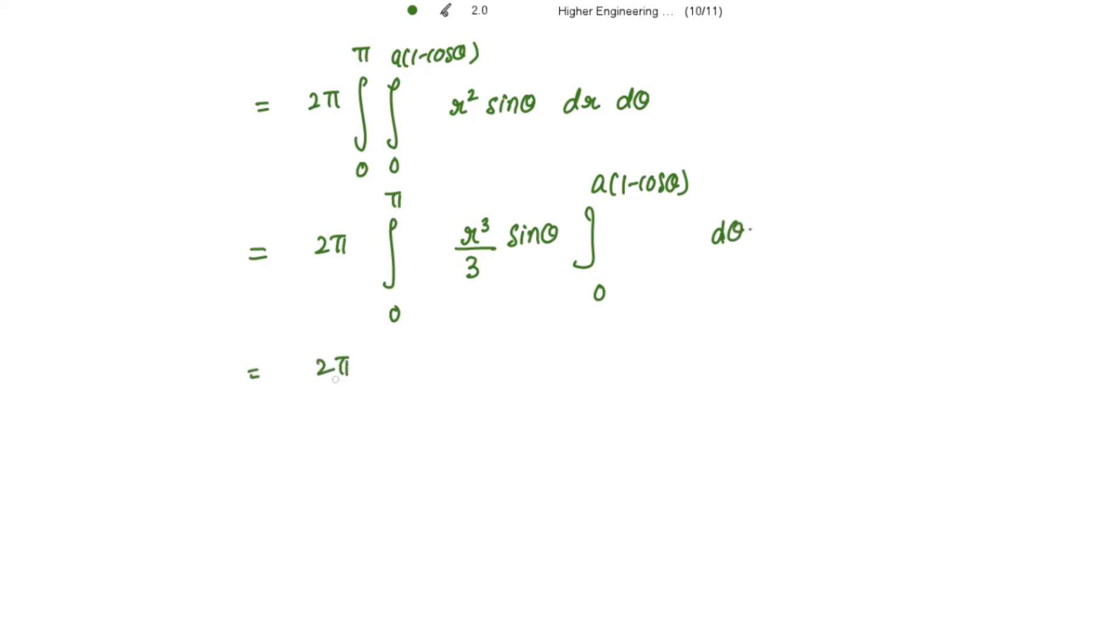So taking 1 over 3 outside, putting the limits, this becomes a cube 1 minus cos of theta cube and if you put 0 over here you get 0 with sin theta d theta.